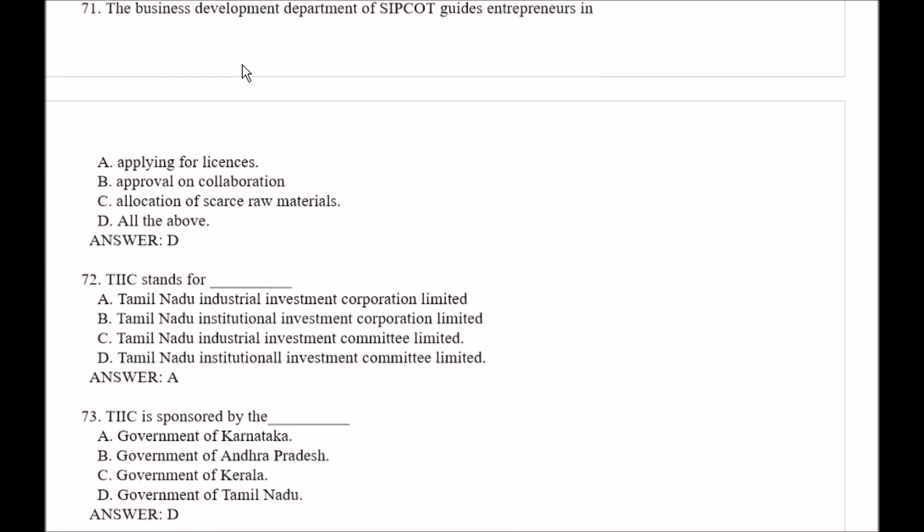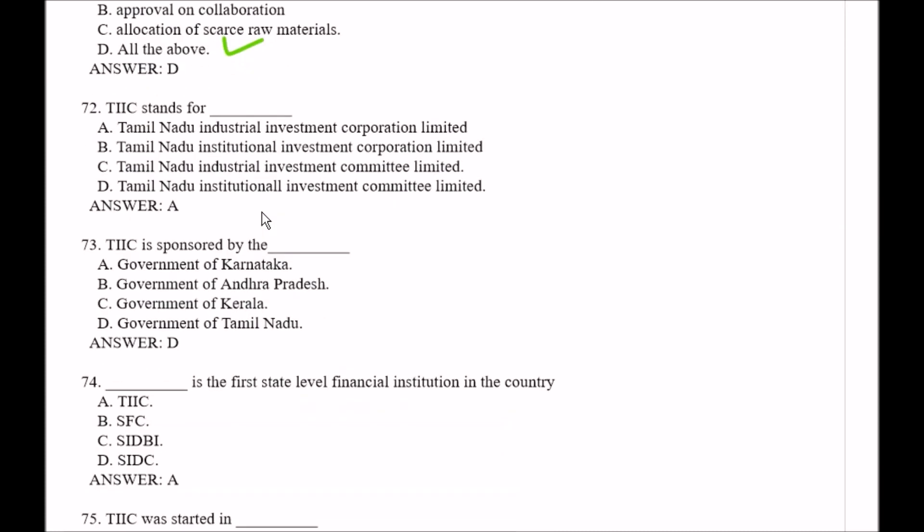Question number 71: The business development department of SIPCOT guides entrepreneurs in — Option A, applying for license; Option B, approval on collaboration; Option C, allocation of scarce raw materials; Option D, all of the above. The right answer is Option D, all of the above.